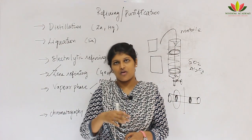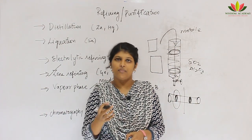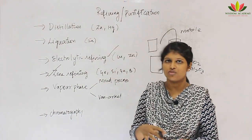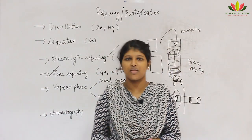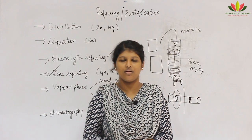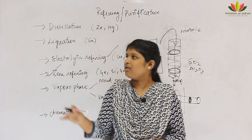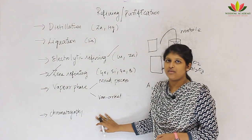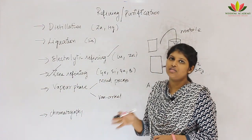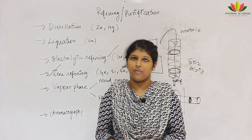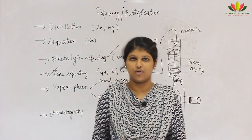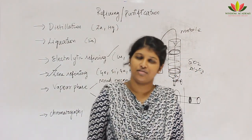In this session we have seen how to convert concentrated ore to metal oxide, then metal oxide to metal, and then how to purify the impure metal obtained using any of the six purification methods. Thank you — like the video, subscribe to our channel, and share with your friends.